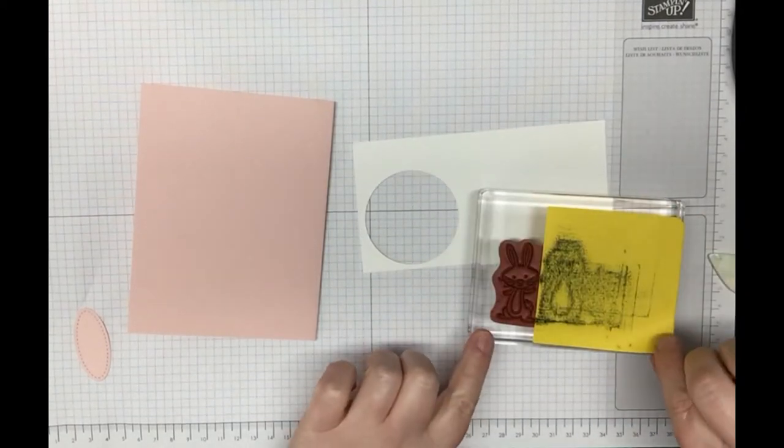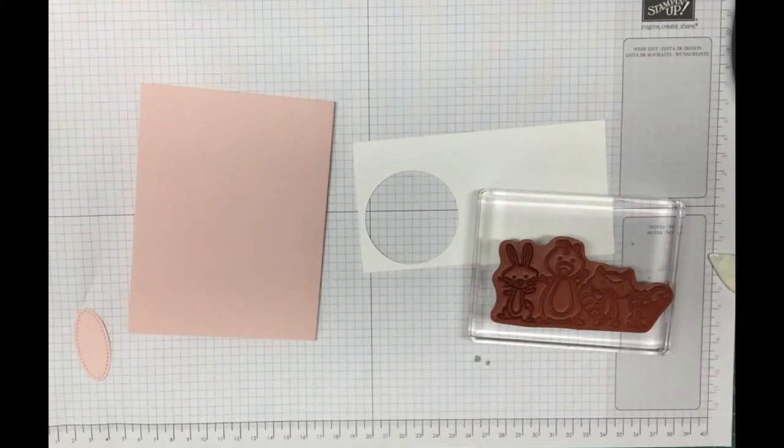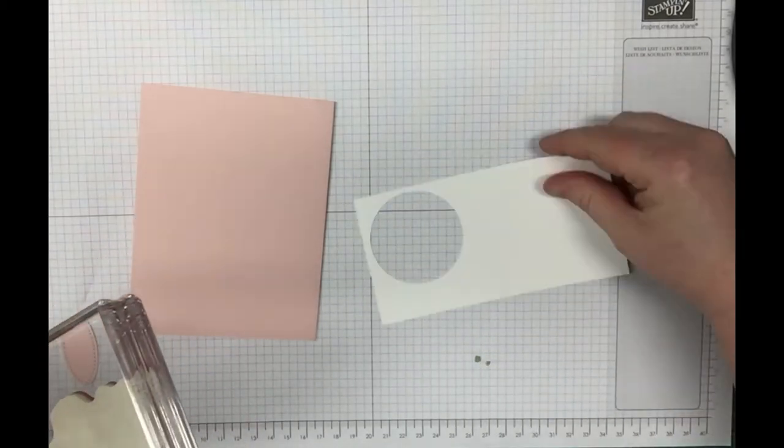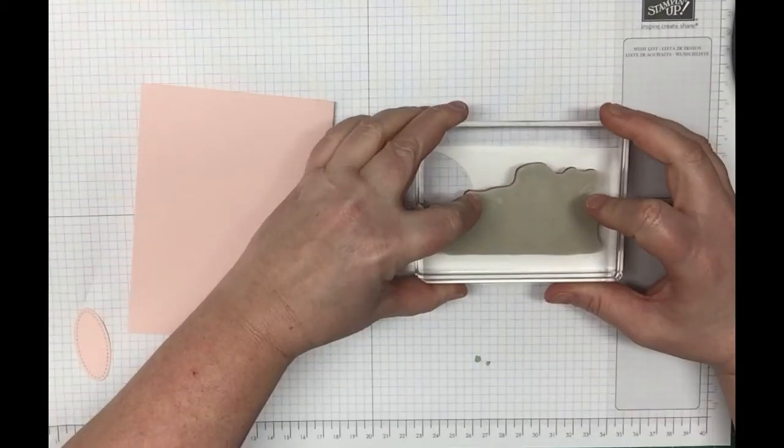Peel this off. Now when you stamp, you're only going to stamp down the rabbit. Make sure you have a big enough space here because you are going to cut this out with the circle framelits.